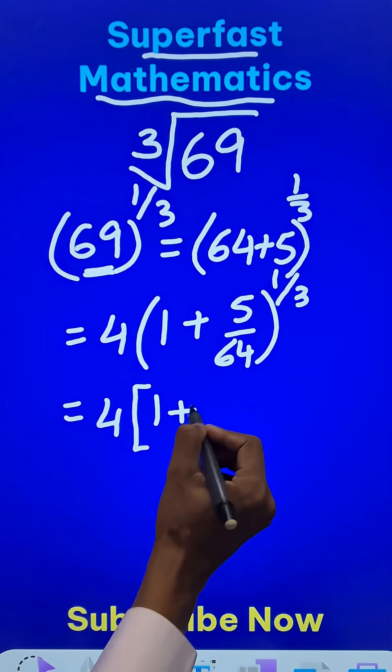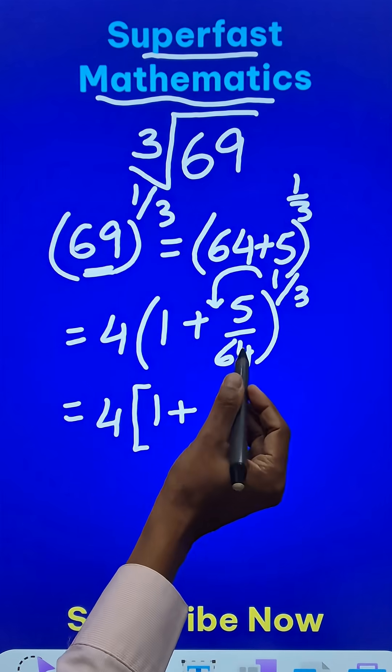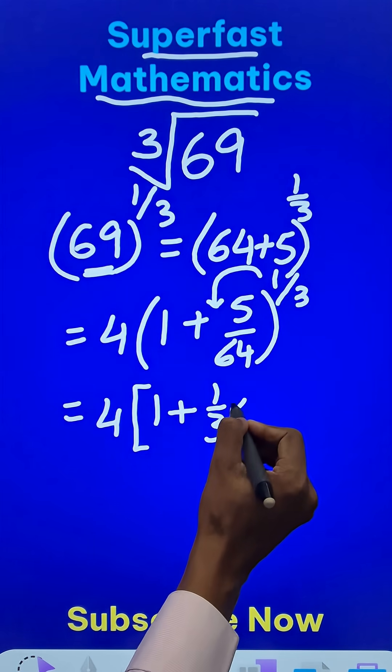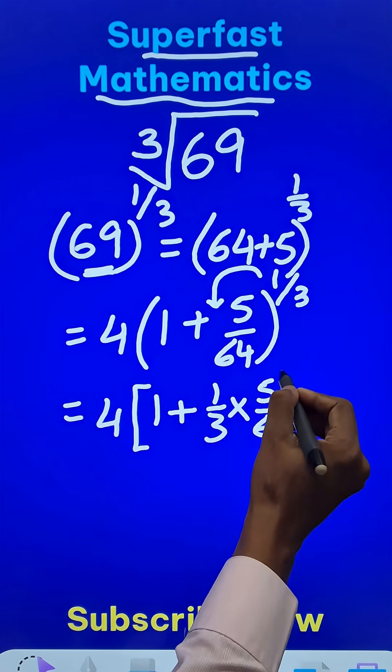How? 1 plus this exponent 1 third, it comes in front here. So 1 third times 5 by 64 and if you calculate this, you will get the approximate cube root.